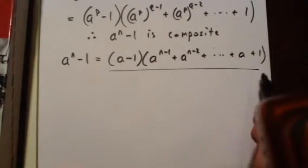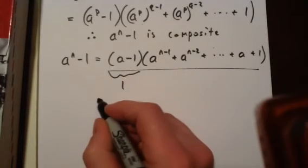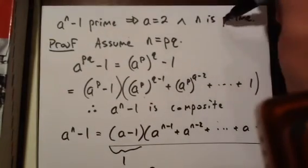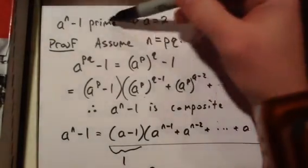And if this number is prime, then this number has to be 1. And therefore, a has to be 2. And so we have shown both of these conditions must be true if this number is prime.